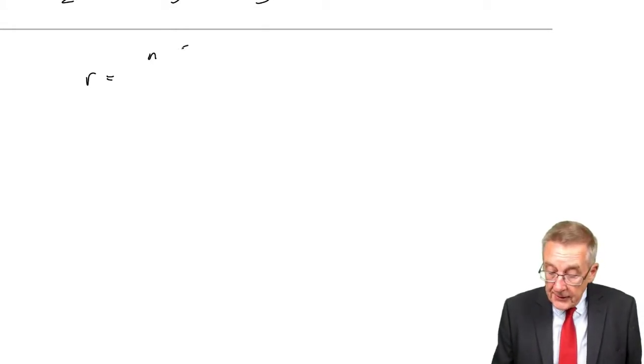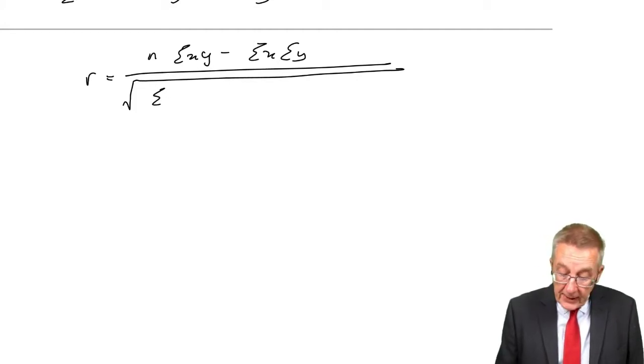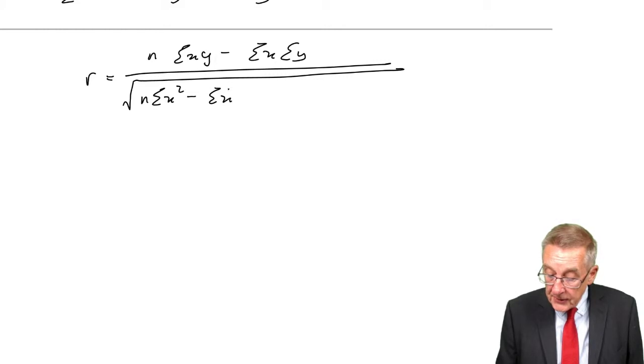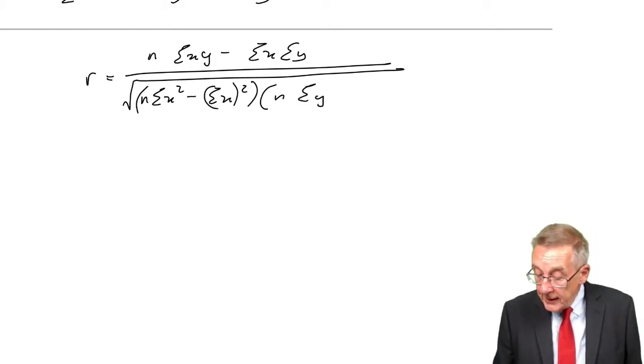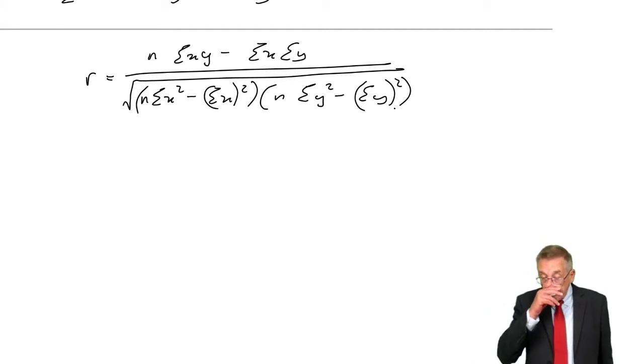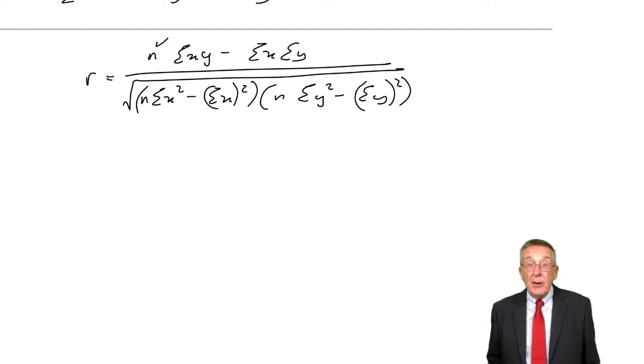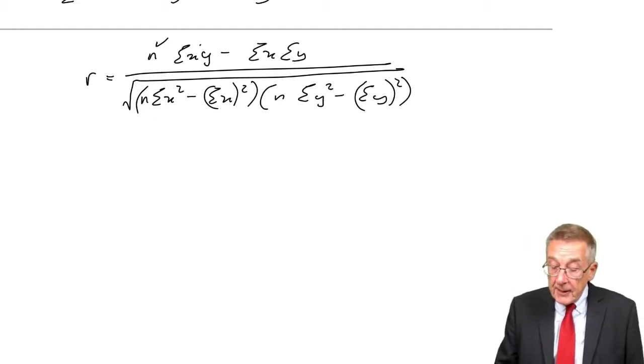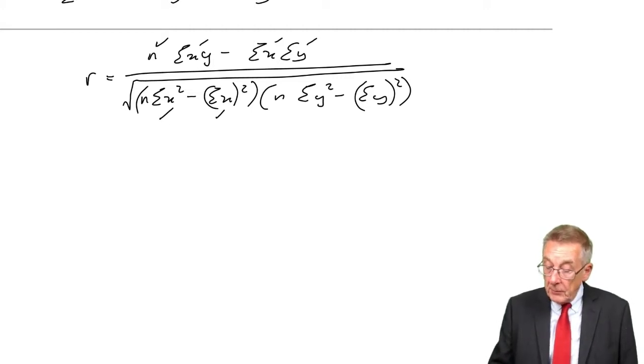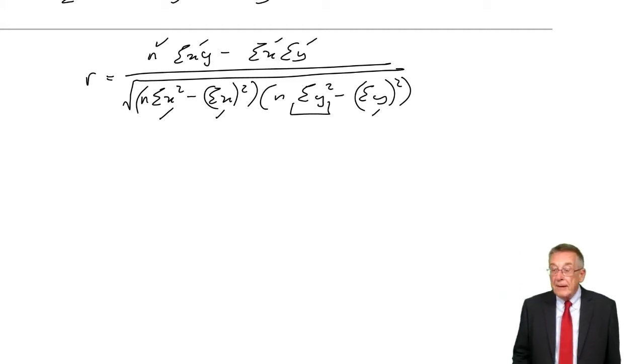You are given the formula in the exam for R, this coefficient. It looks awful: N sigma xy minus sigma x times sigma y, divided by the square root of N sigma x squared minus sigma x all squared, times N sigma y squared minus sigma y all squared. But in fact, we already know most of the figures. The only new term in it is sigma y squared.